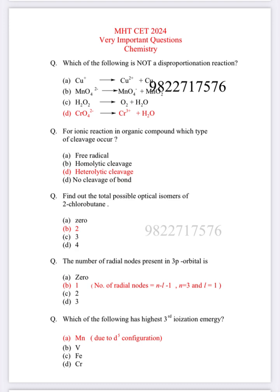Find out the total possible optical isomers of 2-chlorobutane. 2-chlorobutane is an optically active compound and it has one asymmetric carbon atom. So we can use 2 raise to n formula: 2 raise to 1 equals 2. So B is the correct answer.